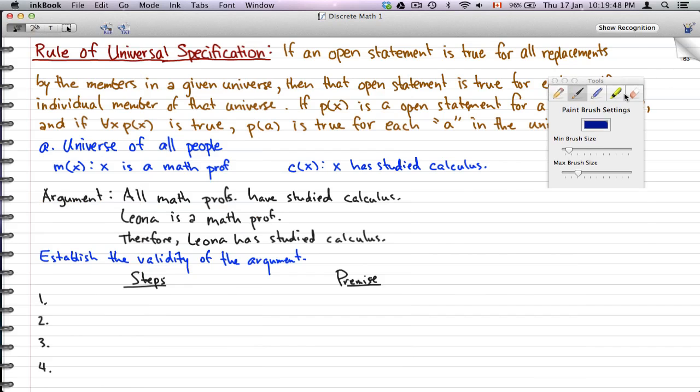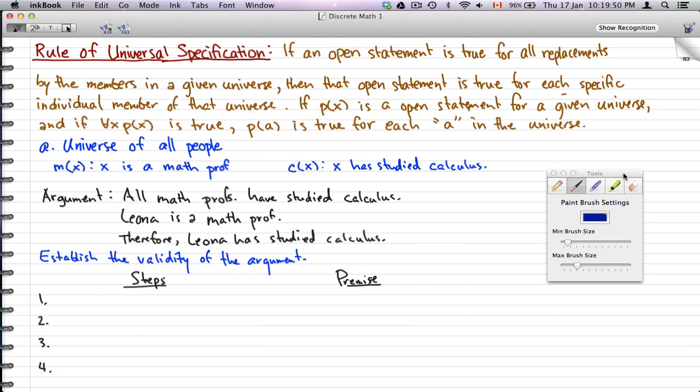Moving on, the rule of universal specification. If an open statement is true for all equations by the members in a given universe, then that open statement is true for each specific individual member of that universe. So what I'm trying to say is, if px is an open statement for a given universe, and if for all x px is true, so for every x in that universe, px that statement is true, then p(a) with a being just some arbitrary element in that universe, p(a) is true for each a in the universe.